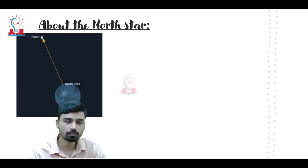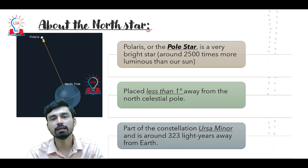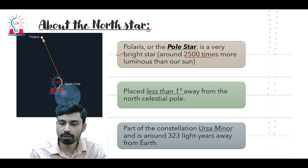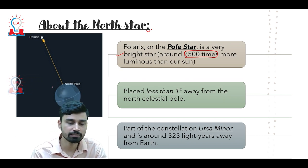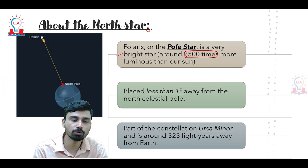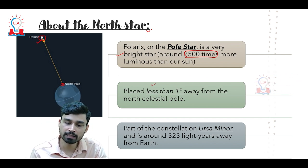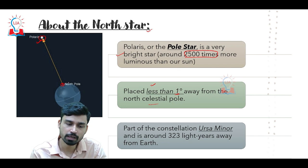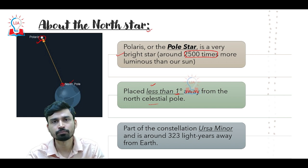The North Star is also known by the common names pole star or Polaris. It is a very bright star — about 2,500 times more luminous than the sun. As you can see from the map, the North Pole of our earth and just in a straight line to it in the sky we can see Polaris. It is placed less than one degree away from the north celestial pole, meaning it is almost in a straight line with the north pole of the earth.